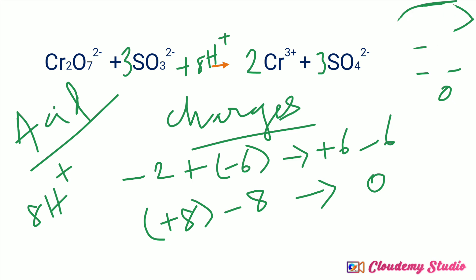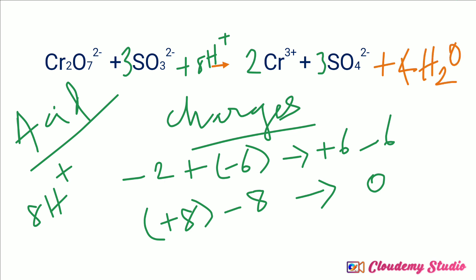Now when we check the atoms in the equation, the left hand side has 8 hydrogen atoms but the right hand side has none. Therefore we need to add water molecules to the right hand side to balance hydrogen. We need to add 4 moles of water to the right hand side.